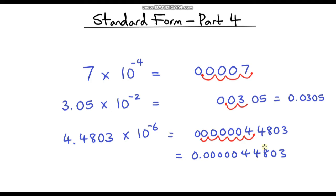Just to reinforce the idea: the reason why we're moving our decimal point to the left is because we are dividing by 10. So although we've got a multiplication symbol here, because we've got the negative power, we are dividing by 10. If this was a positive power, then we're multiplying by 10 and we would be moving the decimal point to the right, but because it's a negative power, we move the decimal point to the left.